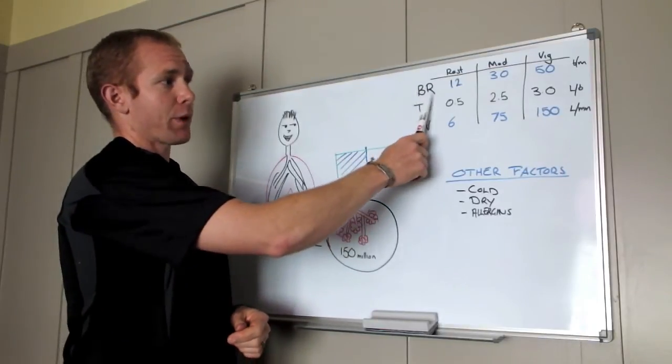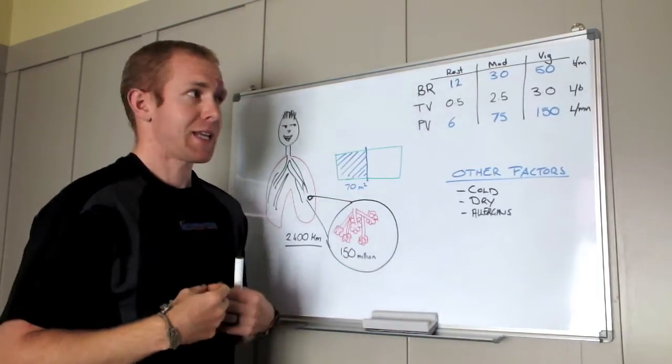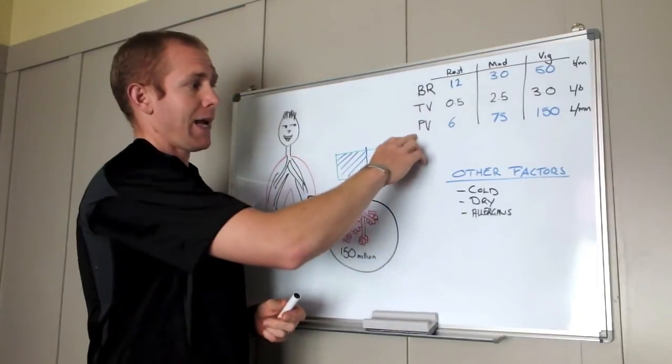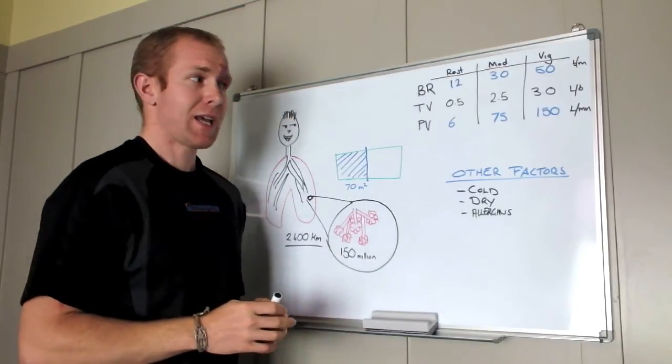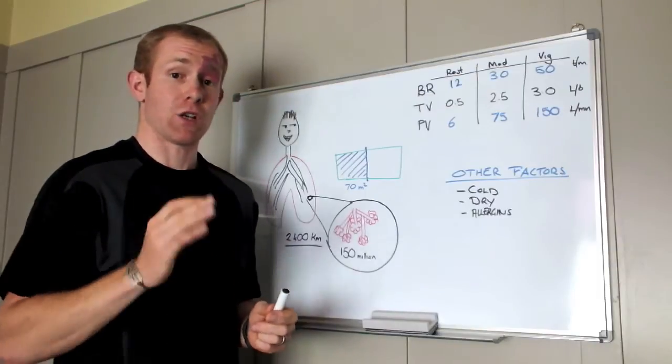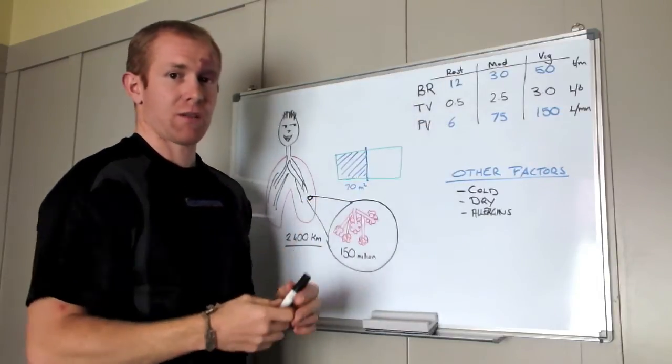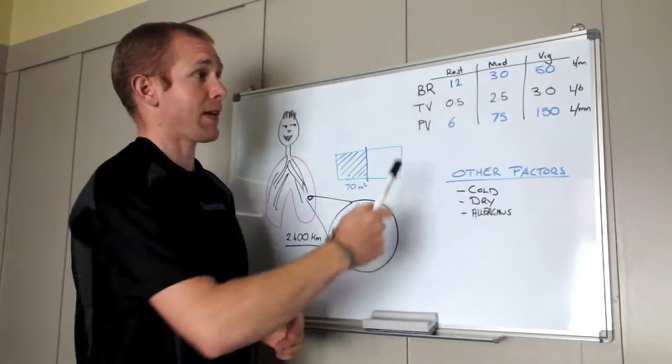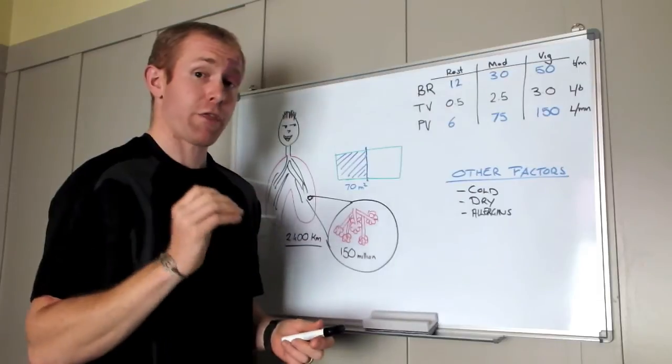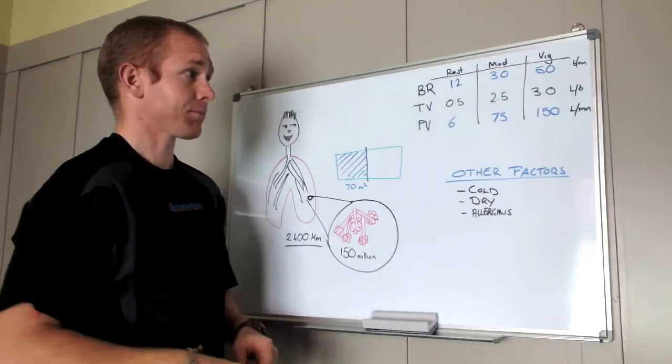So if we're thinking about our breathing rate, how many times we breathe per minute. Our tidal volume, this is how deep we breathe, how many liters of air we take in per breath. And our pulmonary ventilation, this is how much air goes into our lungs and out per minute, so liters per minute. So at rest, our breathing rate's usually around 12. These are just some sort of specific ballpark numbers here, they do vary a little bit. At 12 at about rest, when we go into moderate exercise, that increases to about 30 breaths per minute. And then vigorous exercise, around about 50 breaths per minute.